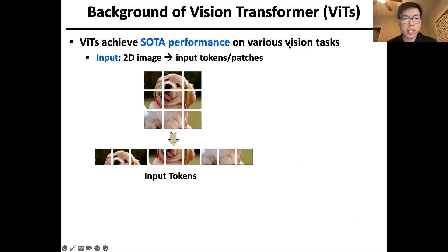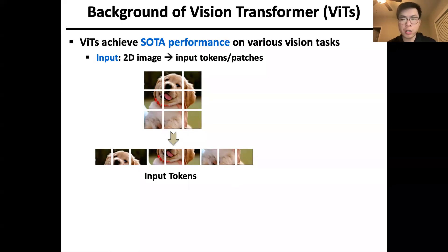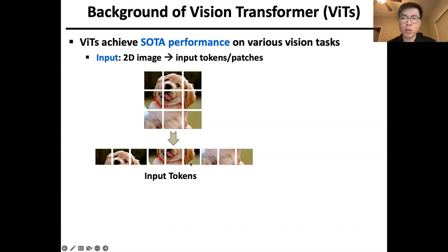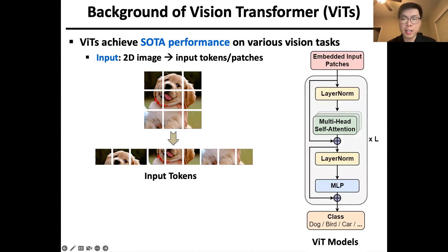The general background of this project is the so-called VIT, Vision Transformers. Recently, VITs achieved state-of-the-art performance on various vision tasks, such as image classification and object detection. They take 2D images as inputs but split them as a sequence of non-overlapping tokens, following the language model. The basic architecture of VITs has two core blocks: multi-head self-attention and MLPs.